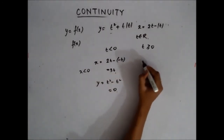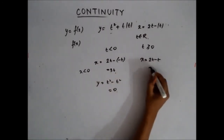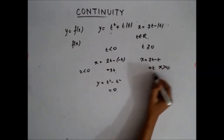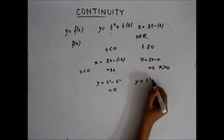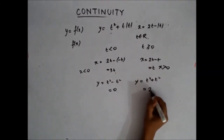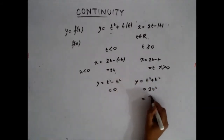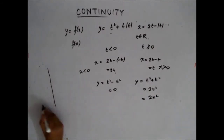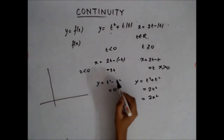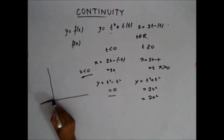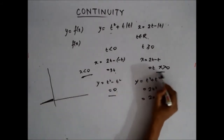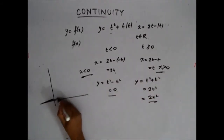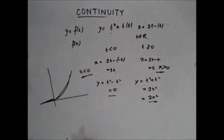When t is greater than 0: x = 2t minus t = t, so x is greater than 0, and y = t² + t² = 2t². Replacing t with x gives y = 2x². So the graph shows y = 0 when x is less than 0, and y = 2x² when x is greater than 0. You can clearly see that the function is continuous with no discontinuity.